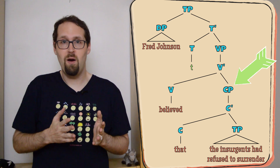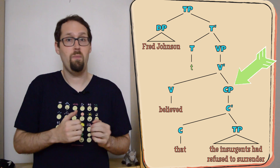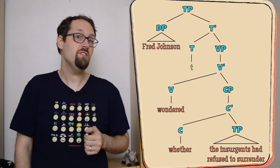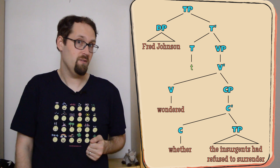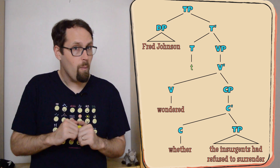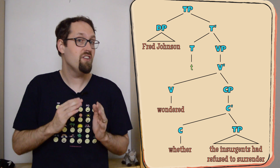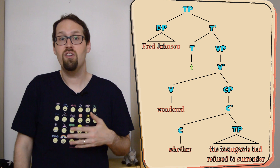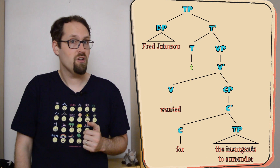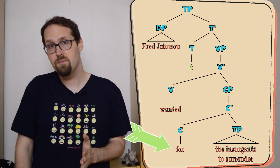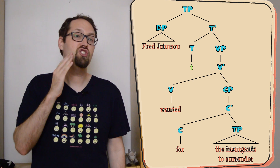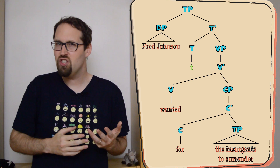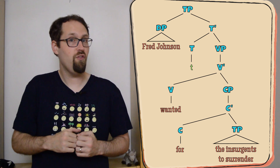Complementizers encode information about whether the clause is making a statement by using 'that', or posing a question by using 'whether', as in, Fred Johnson wondered whether the insurgents had refused to surrender. Verbs that embed complementizer phrases can even have different requirements about whether or not the clause that follows them has tense, as in, Fred Johnson wanted for the insurgents to surrender, with 'for' in place of 'that'. CPs, then, give us just enough leeway to explain how we can embed sentences, without having to make any big changes to the X-bar theory that we've been developing so far.